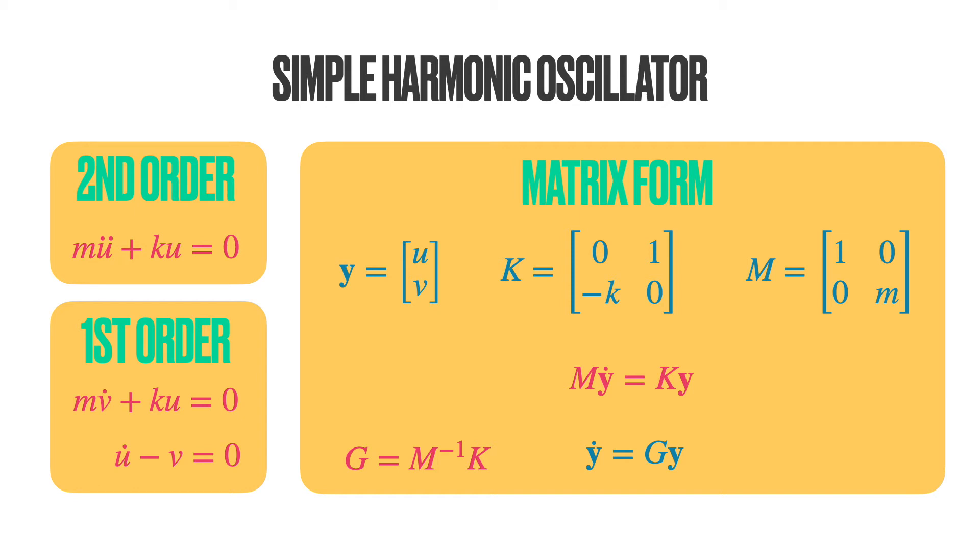However, we can convert the second-order equation to two first-order equations. So you have m v dot, which is the same as the acceleration, but represented now in terms of the so-called velocity, and u stays u, which is the displacement. However, we have to include, in contrast to the second-order equation, a new equation. A new definition of the velocity v has to be equal to the first derivative of u to make things consistent.